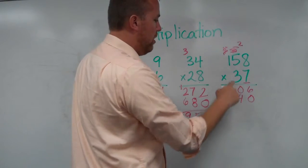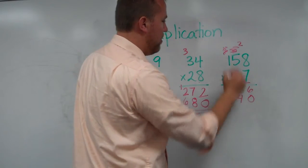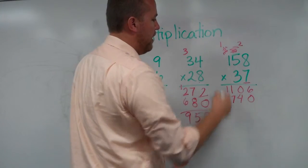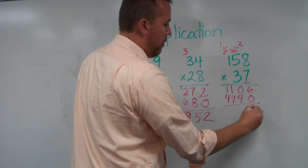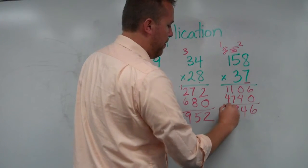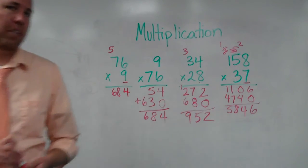24, now 3 times 5 is 15, plus 2 is 17. And 3 times 1 is 3, plus 1 is 4. And then we add 58, 40. There you go. Basic multiplication algorithm.